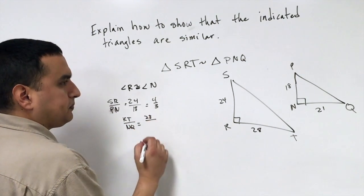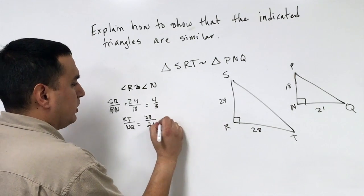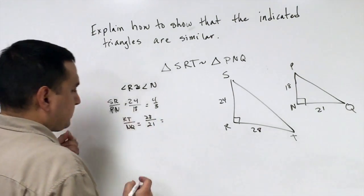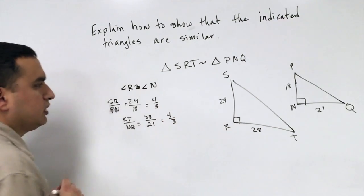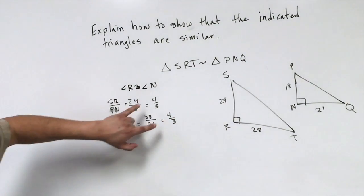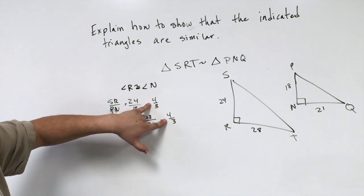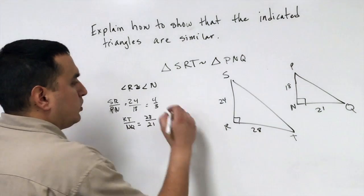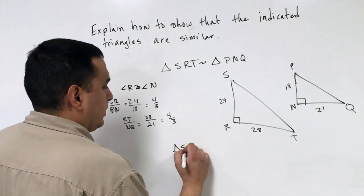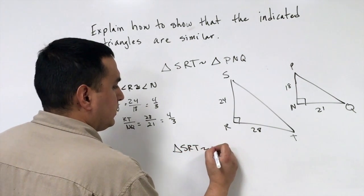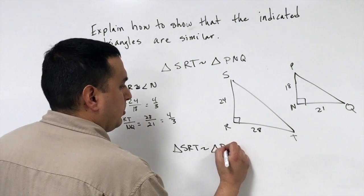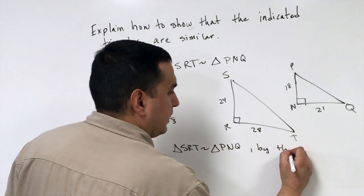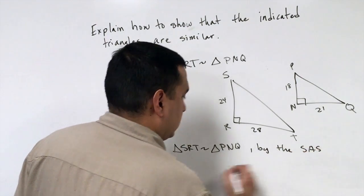RT is 28, NQ is 21. If I reduce or simplify this one by 7, that gives me four-thirds. So I have my two ratios that are similar or equal, and then I have a pair of angles that are congruent. So I would say triangle SRT is in fact similar to triangle PNQ by what's called the Side-Angle-Side similarity theorem.